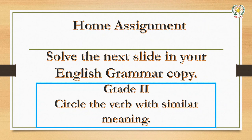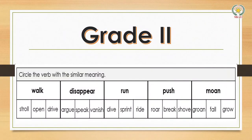For Grade two, the task is to circle the verb with a similar meaning. For example: walk — circle the word similar to walk, such as stroll. Other sets include: open, drive; disappear, argue, speak, vanish; and run, dive, sprint, ride. In each box, circle the one with the similar meaning.